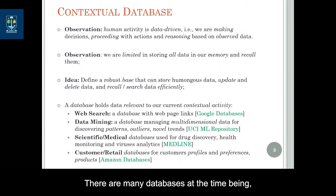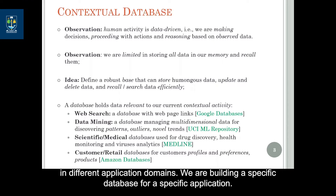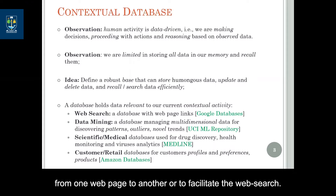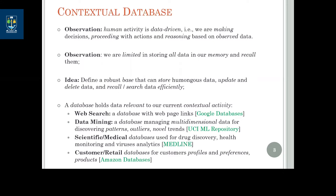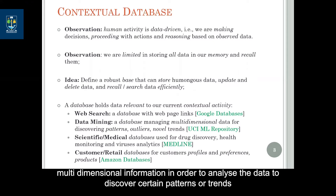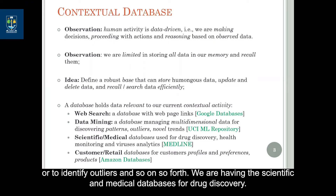There are many databases in different application domains. We build a specific database for a specific application. For instance, in Google we have databases to store web page links to navigate from one web page to another or to facilitate web search. In the data mining application domain, we have databases to store multi-dimensional data in order to analyze the data, to discover certain patterns or trends, or to identify outliers and so on.